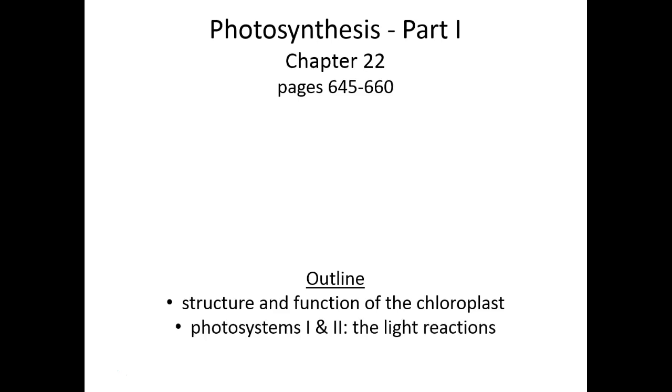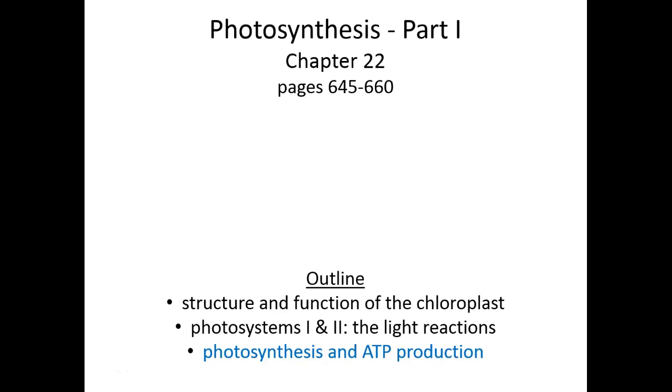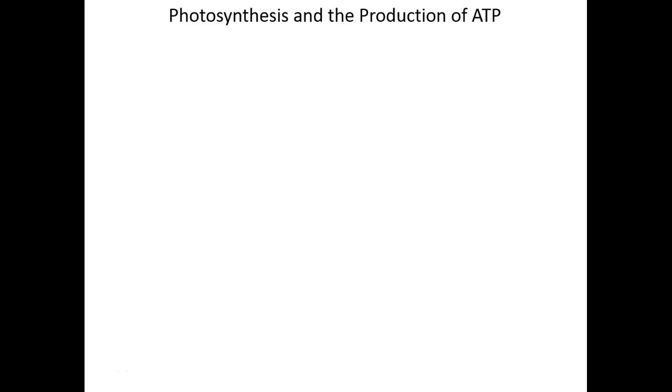We've already talked about the chloroplast quite a bit in chunk A. Chunk B was all about photosystems 2 and 1 and the light reactions that they catalyze. Here we're going to talk about ATP production, photophosphorylation specifically, and again, spend one slide on photosynthesis that occurs without oxygen.